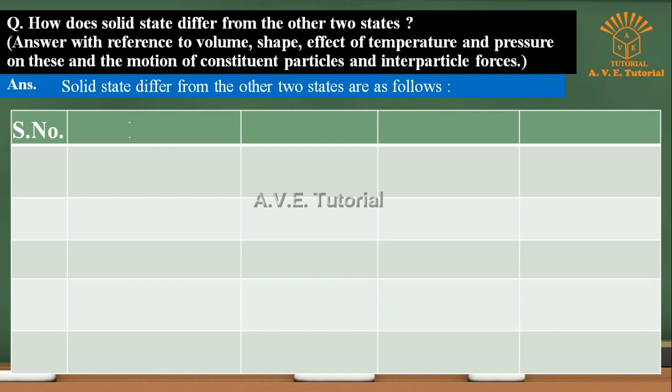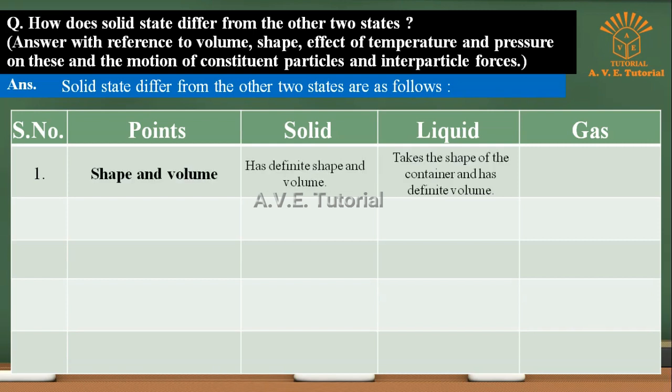Serial number, Points: Solid, Liquid, Gas. One, Shape and volume: Solid has definite shape and volume. Liquid takes the shape of the container and has definite volume. Gas takes the shape and the volume of its container.